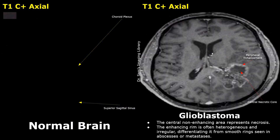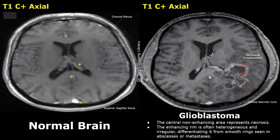Diagnosis on MRI is not made by studying one sequence alone because many lesions appear similar in one sequence. So the imaging findings are always studied in multiple sequences. We are taking this step by step. Now we will look at T1 contrast images, which are very helpful in the diagnosis of glioblastoma and have very specific findings. We will study T2 and other sequences later on.